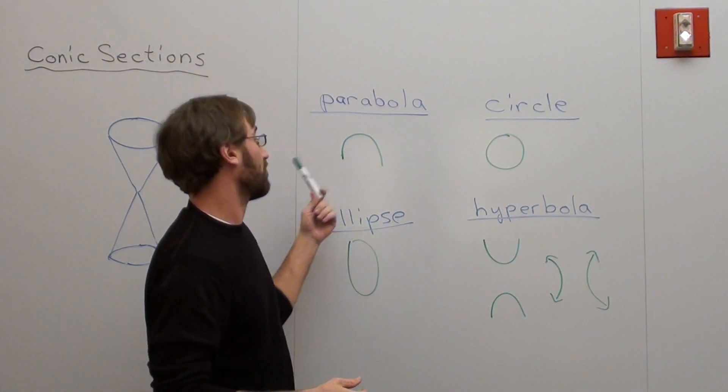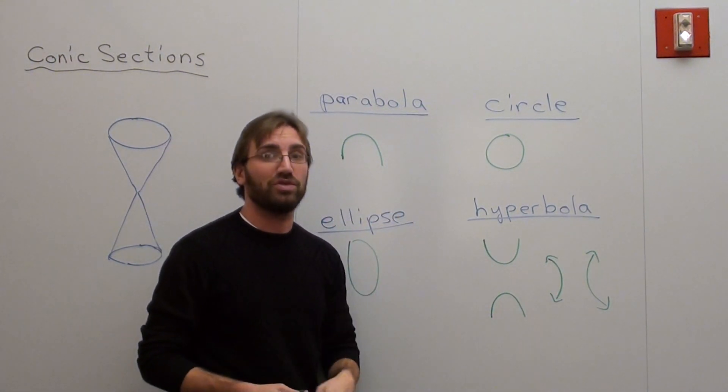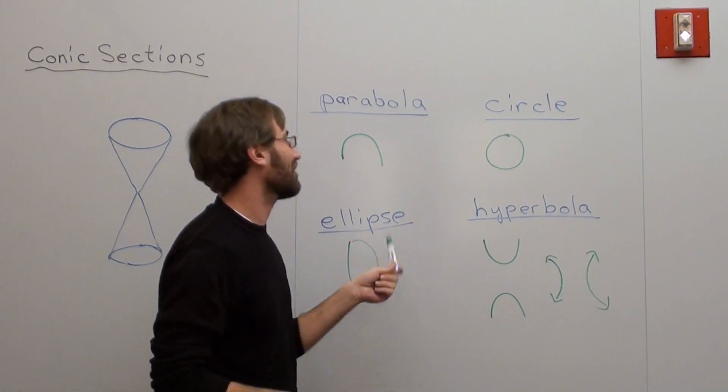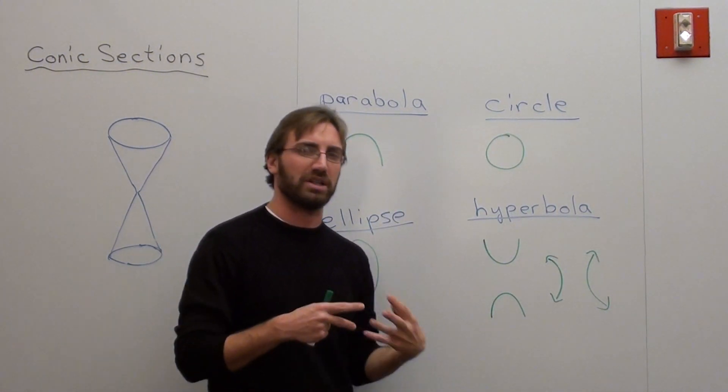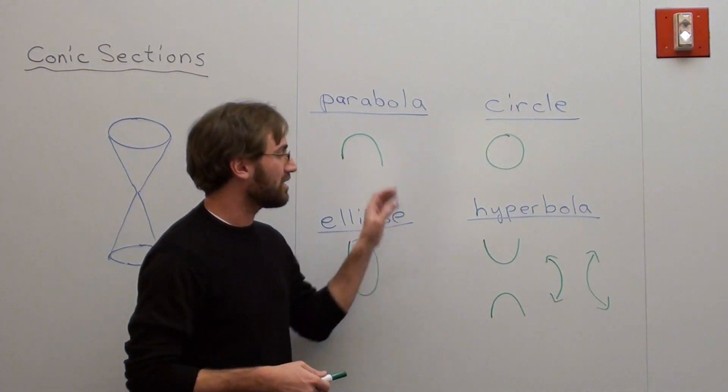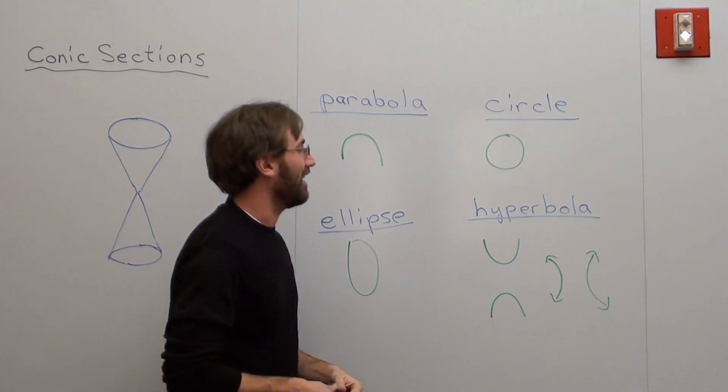And that's what we're going to explore. And we're going to start with the parabola first and move on to the circle or ellipse. I haven't decided, but the hyperbola is probably the most complex, the most difficult to understand. So we'll save that one for last.